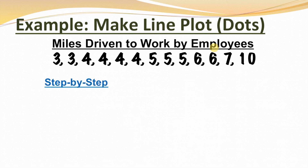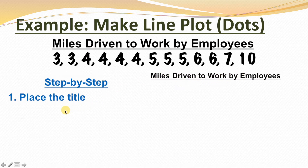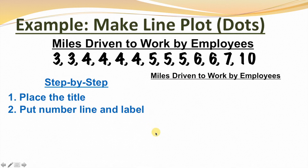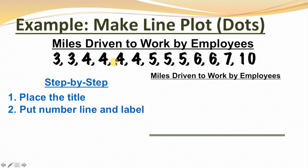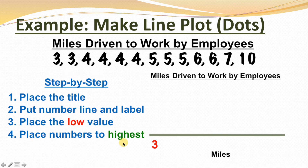Now we'll follow the step-by-step process. Step 1, place the title — miles driven to work by employees. Step 2, put number line and label. Our number line goes down here, and since we're talking about miles driven, we'll label it as miles. Step 3, place the low value. Since our numbers are in order from least to greatest, our lowest value is three, so we'll put that at this end. Step 4, place numbers to the highest. Our numbers range from three all the way to ten, so we're going to go from three all the way to ten.